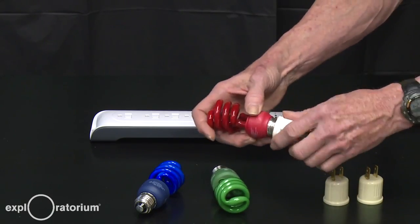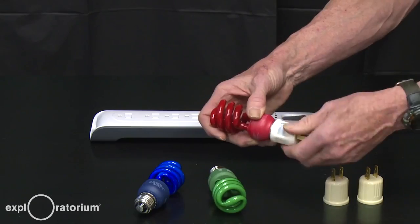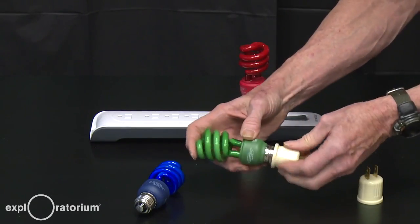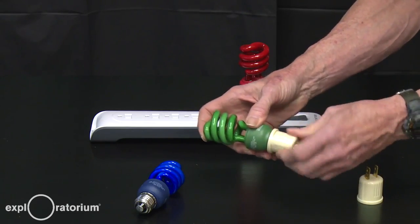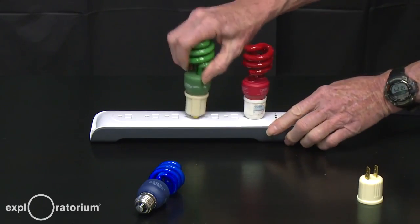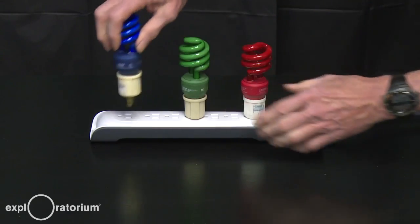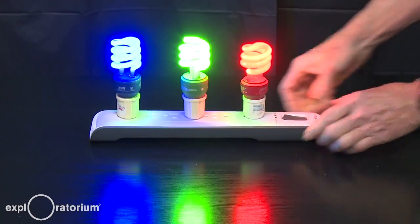You're going to need to screw the bulbs into the plug-in socket adapters and then plug them into the power strip. You'll want to do this in the order of red, then green, then blue. And when you're done, you turn them on.